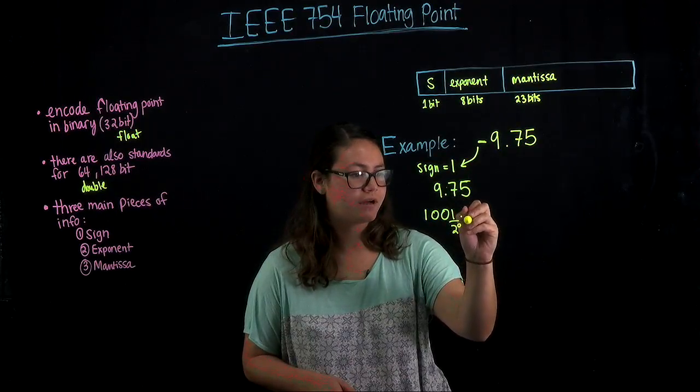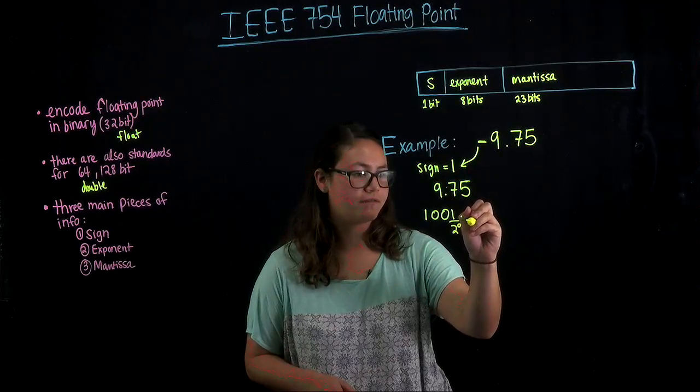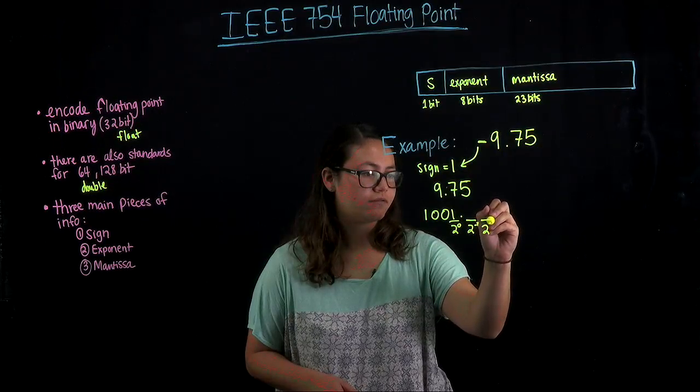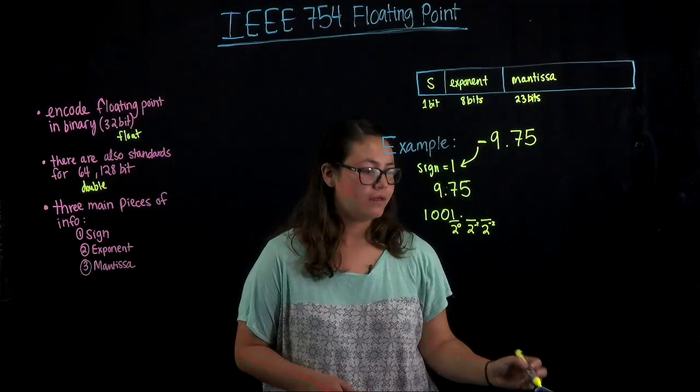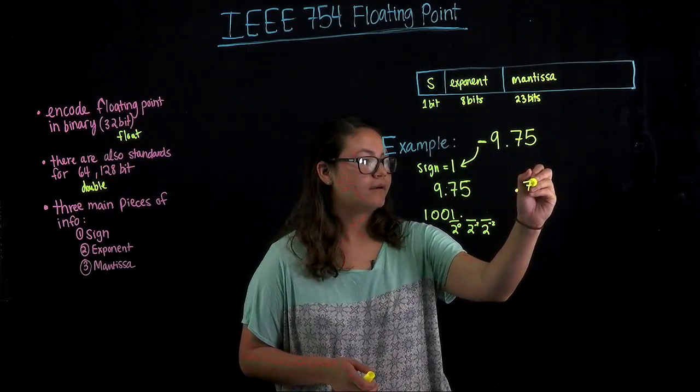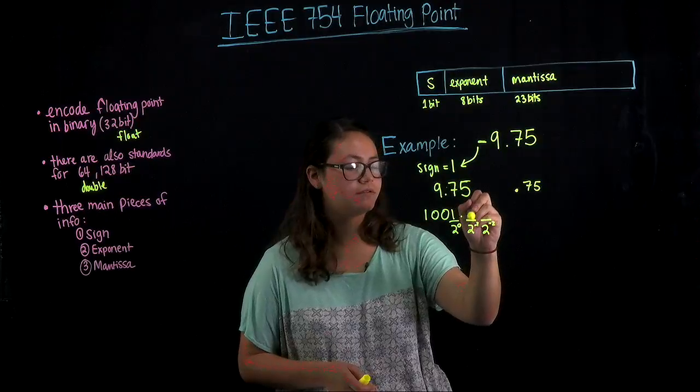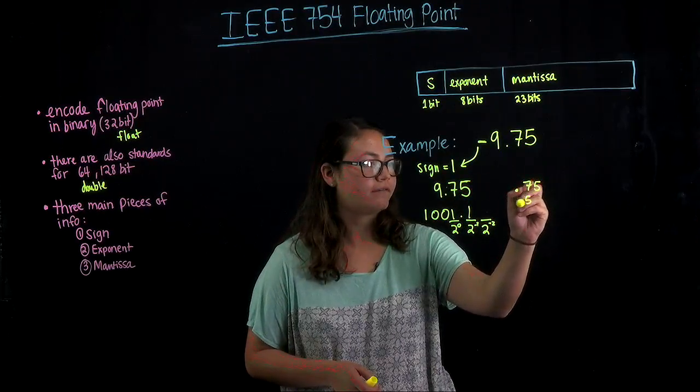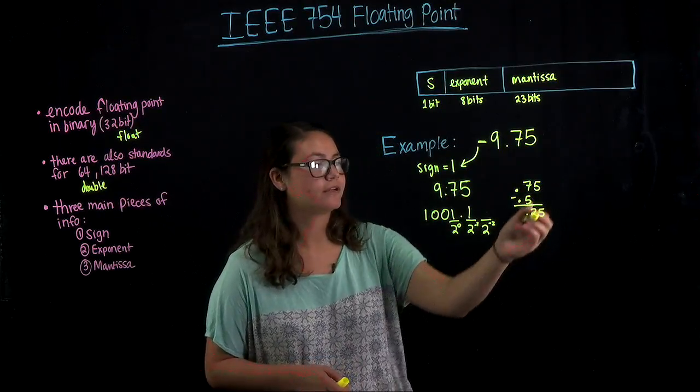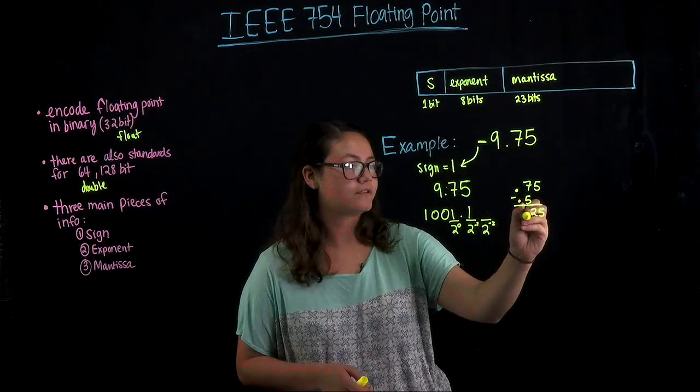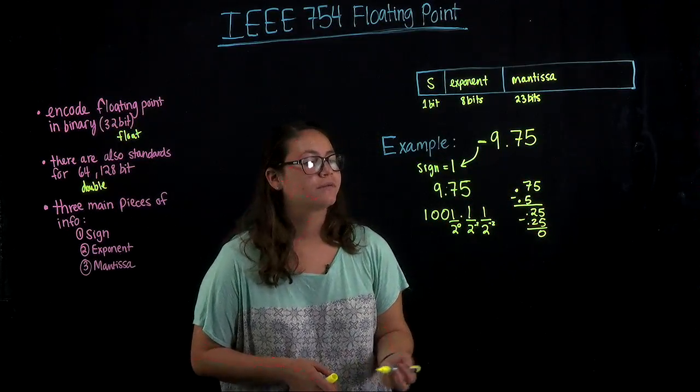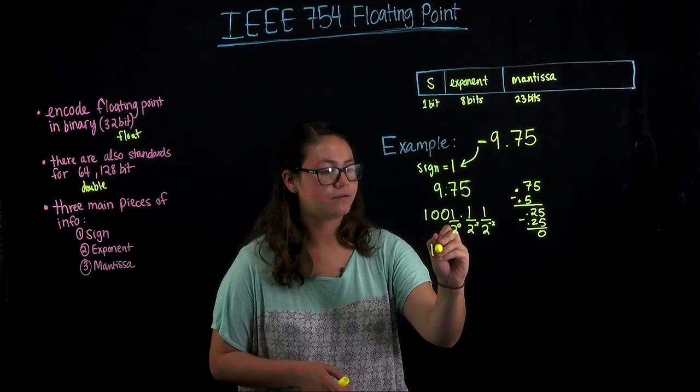And then the right side is going to be... so this place is 2 to the 0. So the first place to the right of the decimal is going to be 2 to the negative 1, and then 2 to the negative 2. The highest power of 2 that will fit into 0.75 is going to be 2 to the negative 1, which is 0.5. So we have 0.25 left over. The highest power of 2 that will fit into 0.25 is 2 to the negative 2, which is 0.25. So we're done converting both sides to binary.